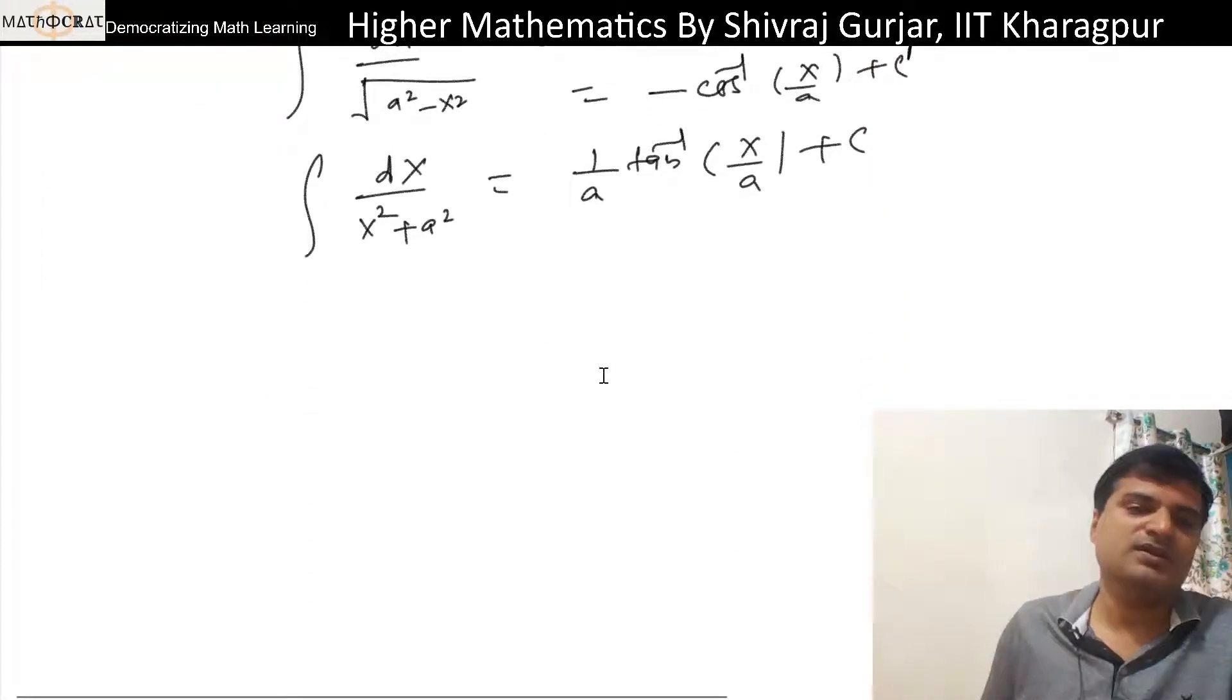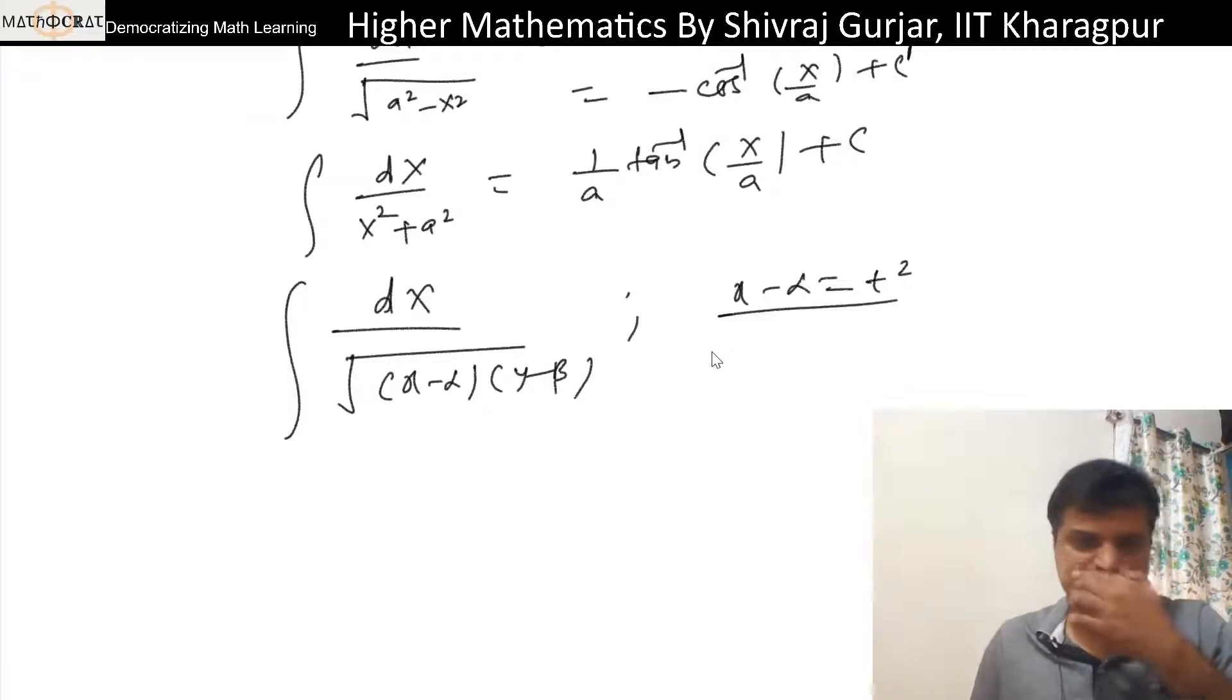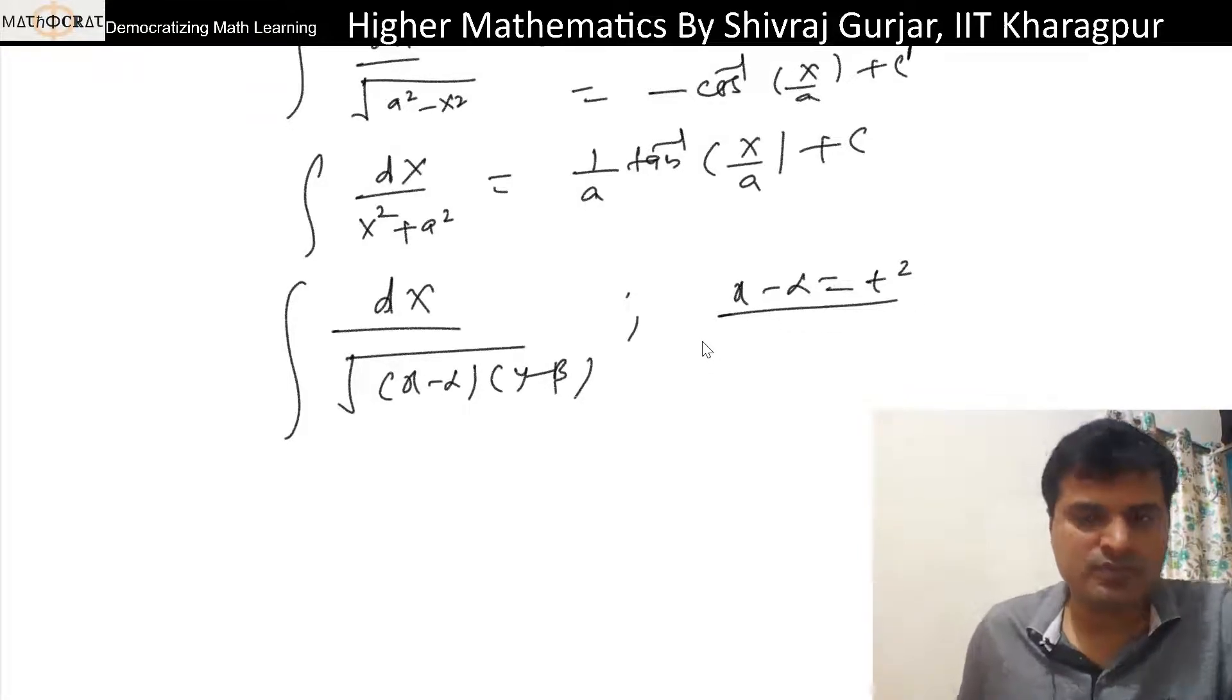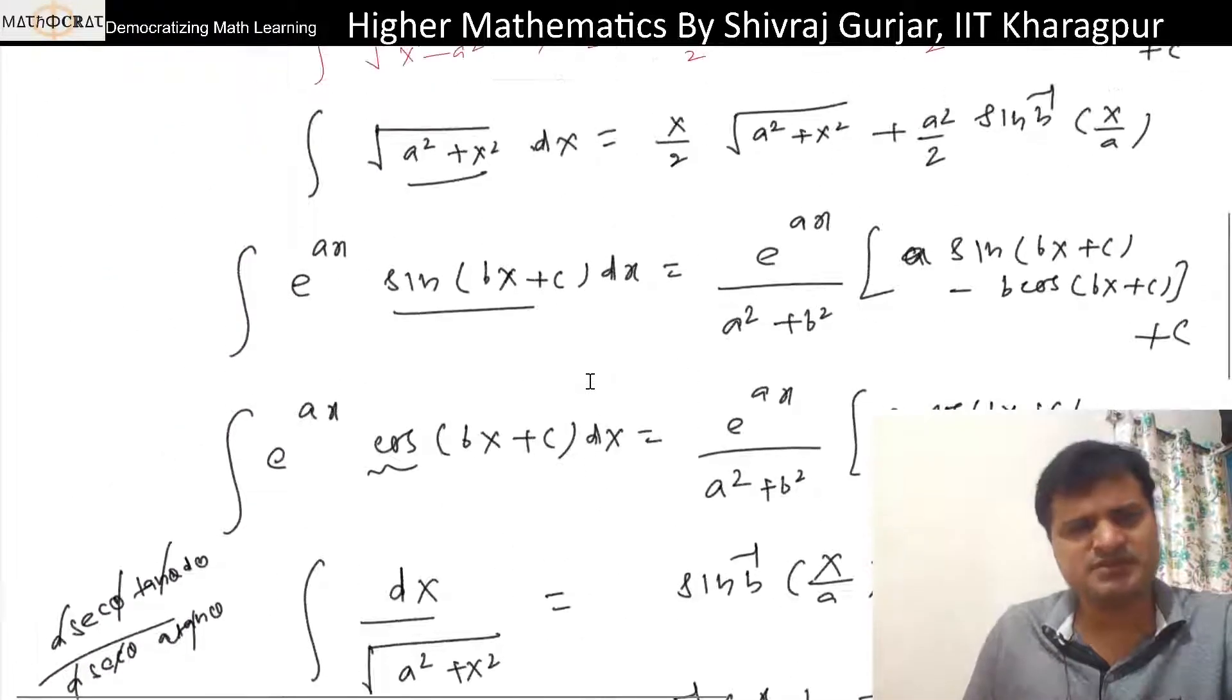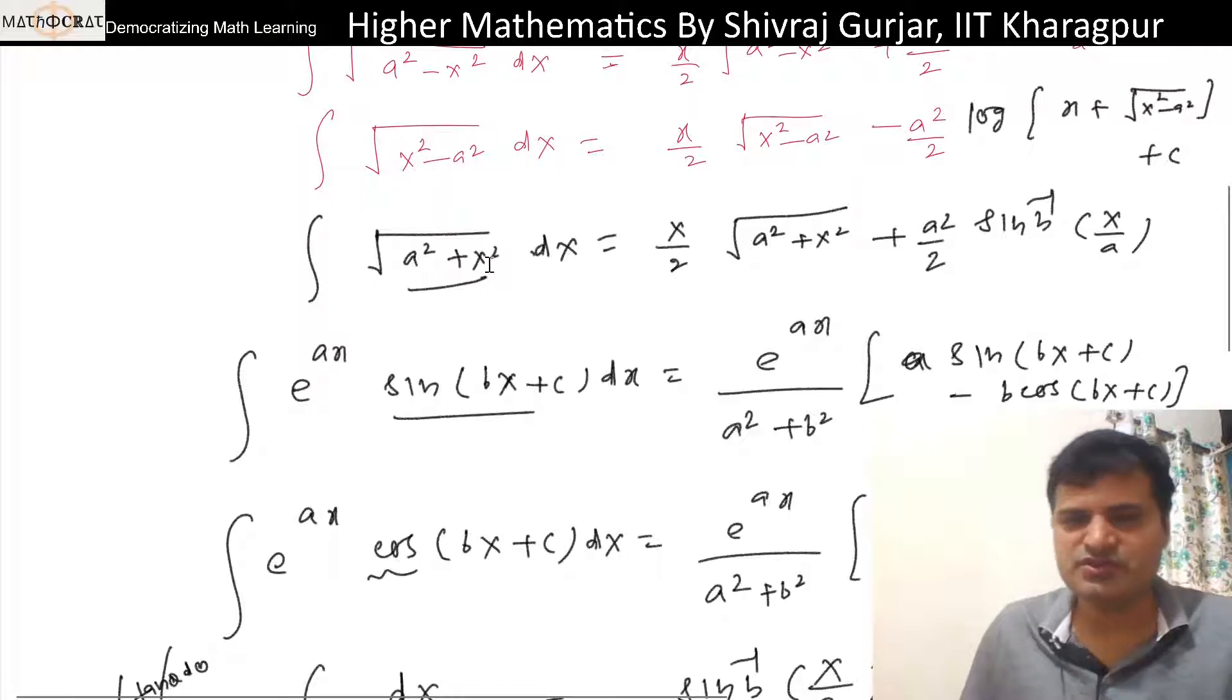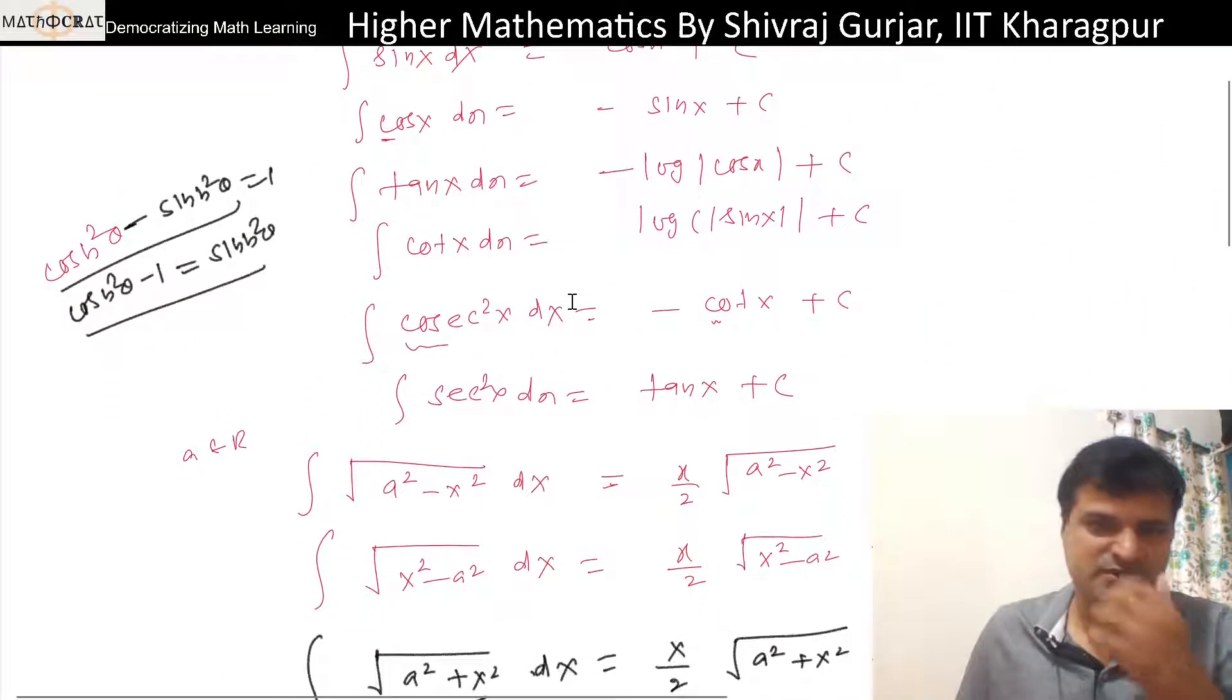For integrations involving root of x minus alpha times x minus beta, we can use substitution x minus alpha plus beta by 2 equals t square. These are some formulas which will be handy in the subsequent chapters. Others we will deal with in the questions as and when we encounter them.